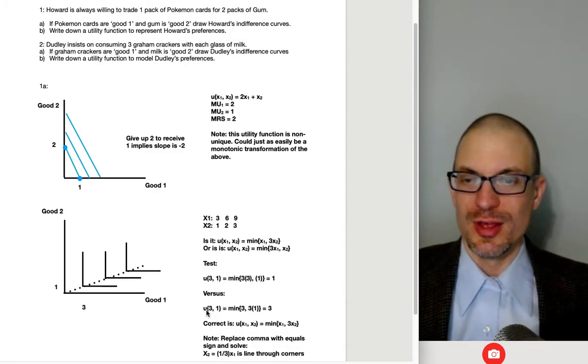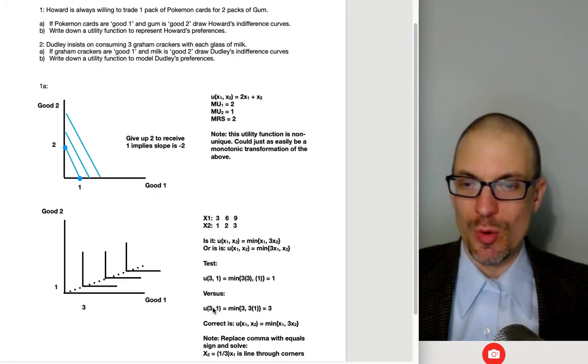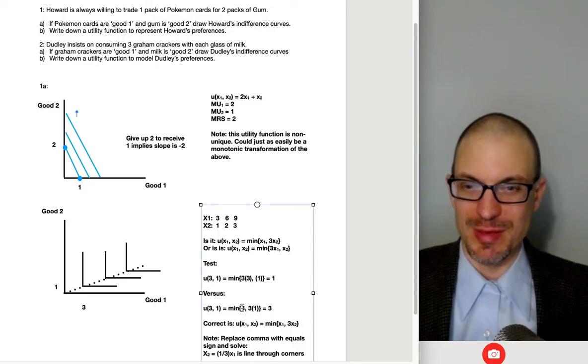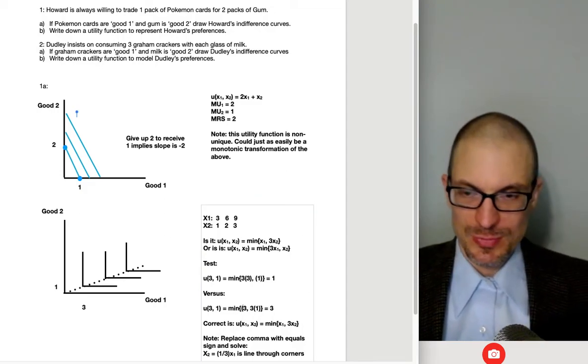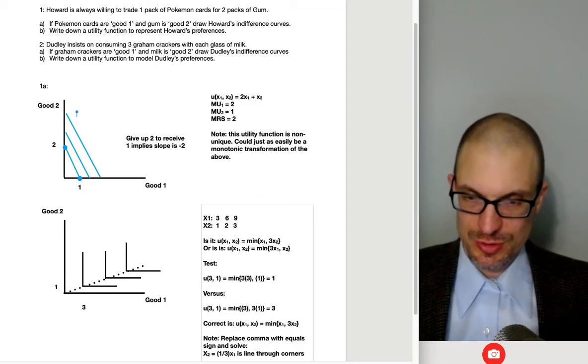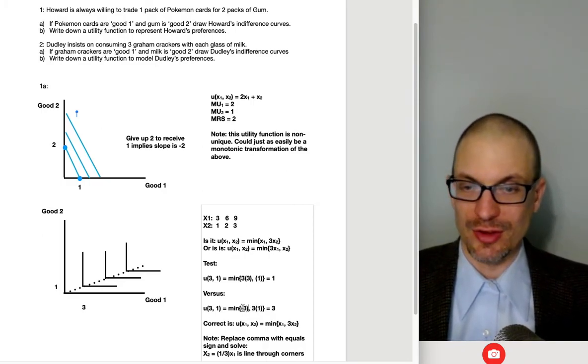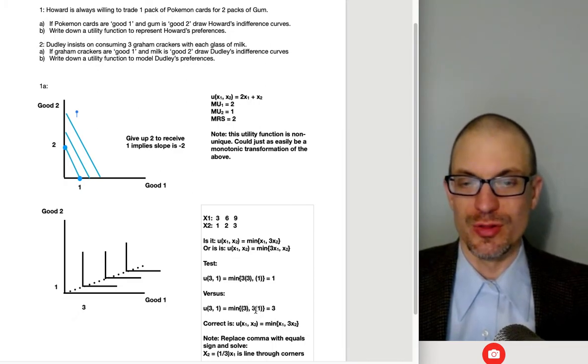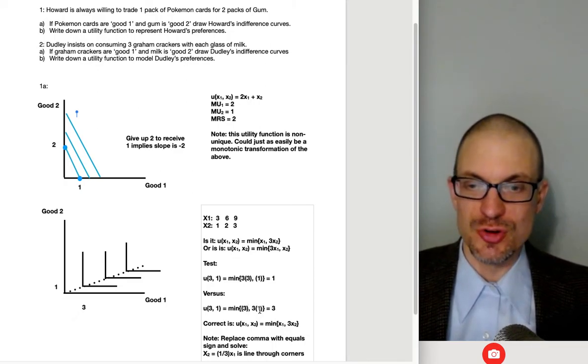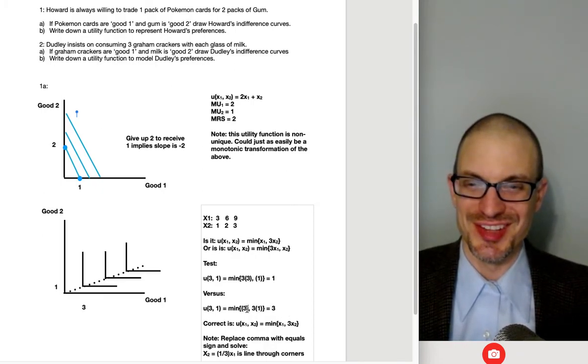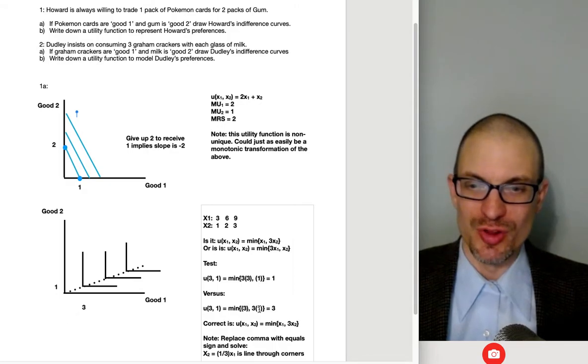So again, the same point, three graham crackers and one glass of milk, the minimum of three and three times one. This is three glasses of milk. Maybe I could even put my parentheses around here. Cool, and then here's like to indicate that we're evaluating X1 at three, and here we're evaluating X2 at, or, you know, valuing the utility function where X2 is one. Anyway, so the minimum utility is going to be, or utility is going to be the smaller of both sides here. Oh, it's three in both cases.